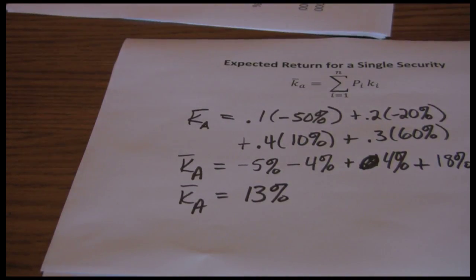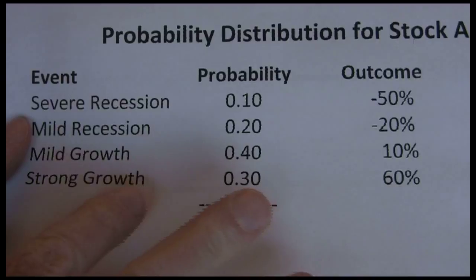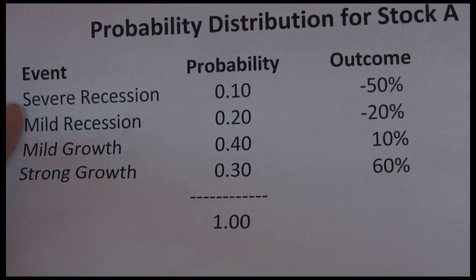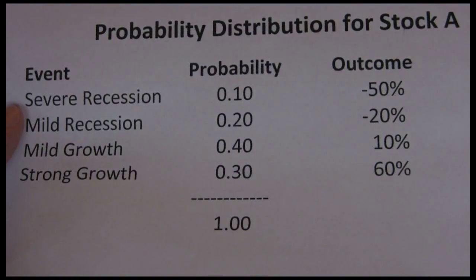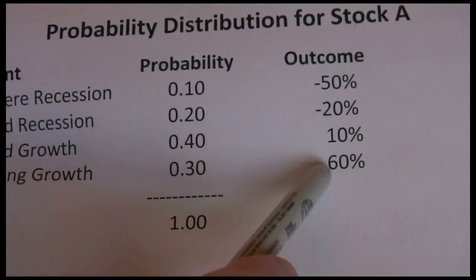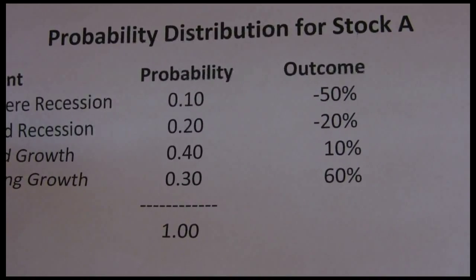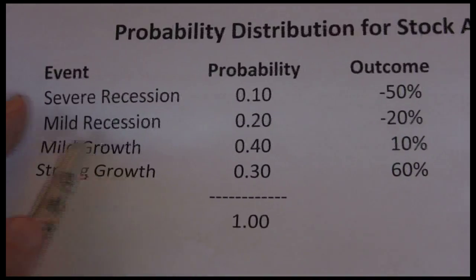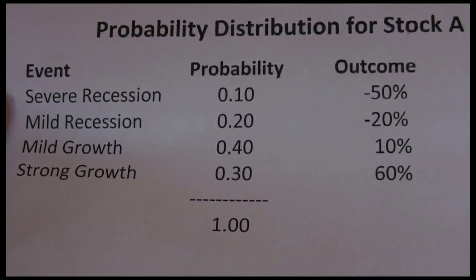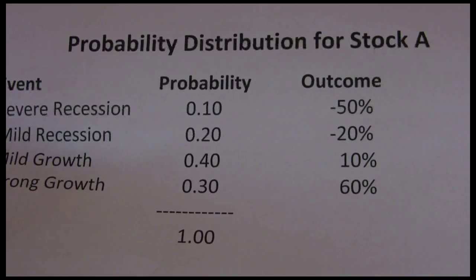Now let's go back to one of the things I said. The expected return is our average rate of return. If we could repeat this next year 10,000 different times, on average we would expect to earn thirteen percent from this stock. Thirteen percent is not our actual outcome. Given this probability distribution there is no single scenario which generates a thirteen percent rate of return. It's also not our most likely outcome. Our most likely outcome is a ten percent rate of return. So the thirteen percent, the expected return, just represents the average rate of return that we can earn over a long period of time.